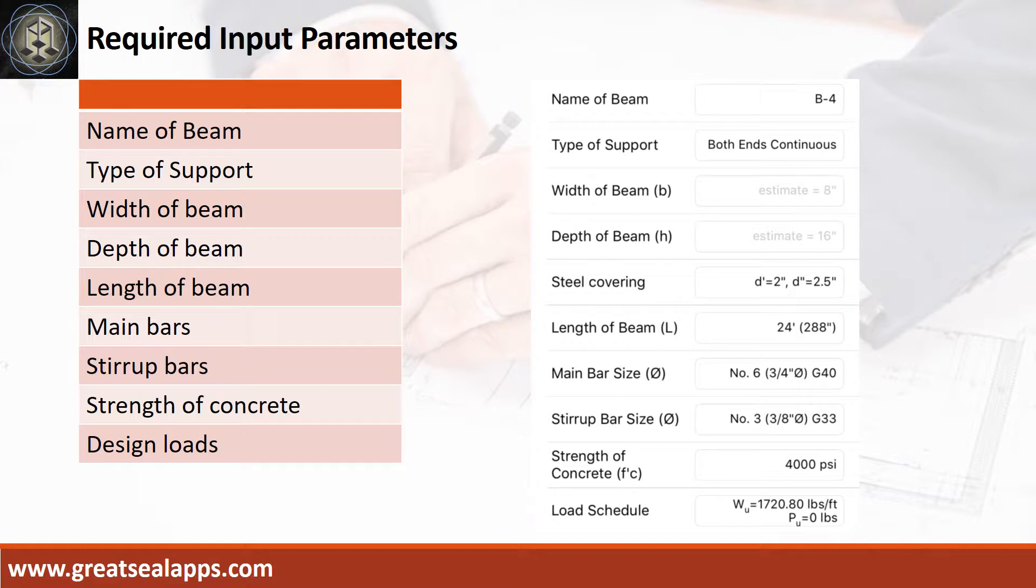main bars, 3/4 inch diameter at grade 40, stirrup bars, 3/8 inch diameter at grade 33, strength of concrete, 4000 psi, and total load, 1,720.8 pounds per foot.